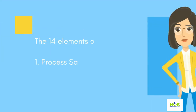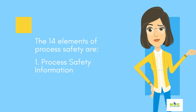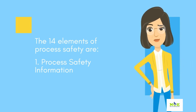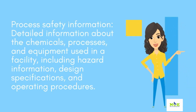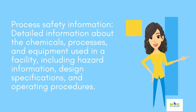The 14 elements of process safety are: 1. Process safety information — detailed information about the chemicals, processes, and equipment used in a facility, including hazard information, design specifications, and operating procedures.